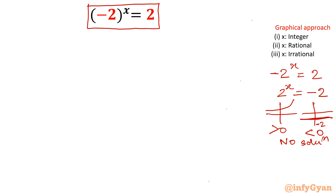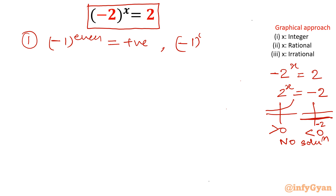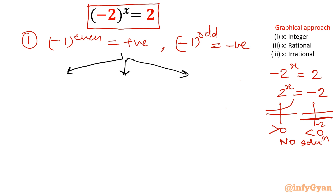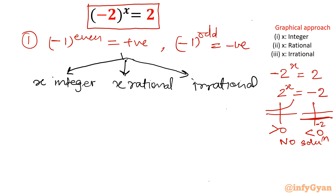But the bracket is there, so we have to classify. Because negative 1 raised to an even power is always positive, and negative 1 raised to an odd power is always negative. This is something we will use again and again. Let me classify x. I am defining this function based on the condition of x: whether x is an integer, a rational number, or an irrational number. We will see each case one by one.